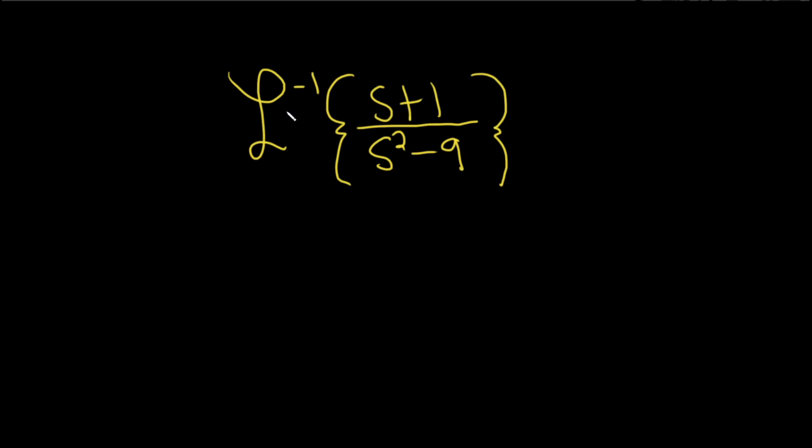In this problem, we're going to find the inverse Laplace transform of this function here. We're going to start by breaking it up into two different Laplace transforms. We're going to write it as s over s squared minus 9, and then plus 1 over s squared minus 9.